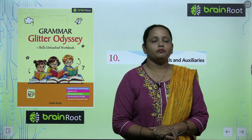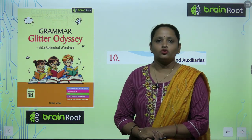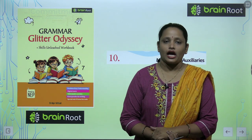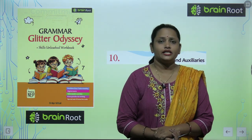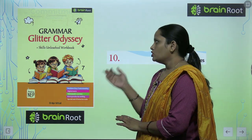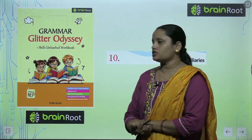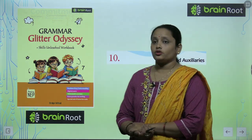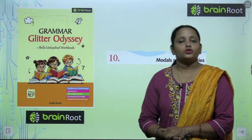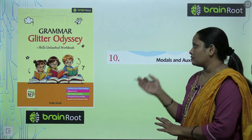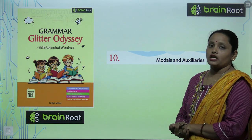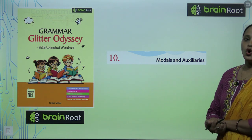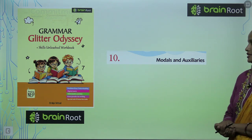Hello my dear kids, welcome back to the Brain Root series by Amit Publishing House. I am Vandana and we are doing English grammar of class 7. Here children, this is your book and the name of your book is Grammar Glitter Odyssey. Today we are going to start with chapter number 10, and the name of the chapter is Modals and Auxiliaries.